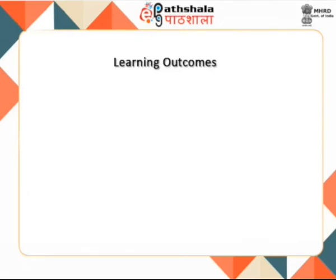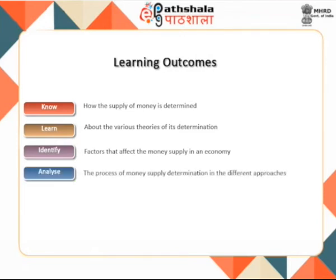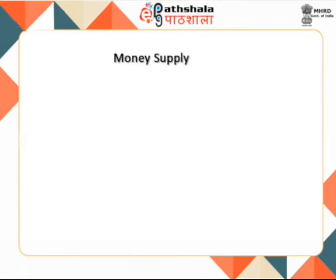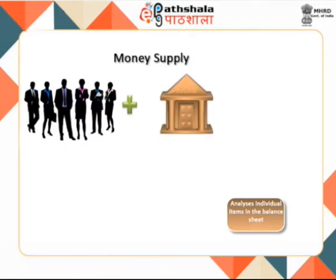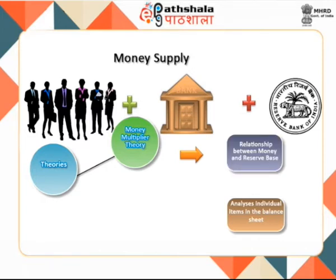After studying this module, you shall be able to know how the supply of money is determined, learn about the various theories of its determination, identify factors that affect the money supply in an economy, and analyze the process of money supply determination in the different approaches. The money supply in an economy is not policy determined but determined jointly by the public, banks and monetary authorities. There are two theories: the money multiplier approach and the structural approach.